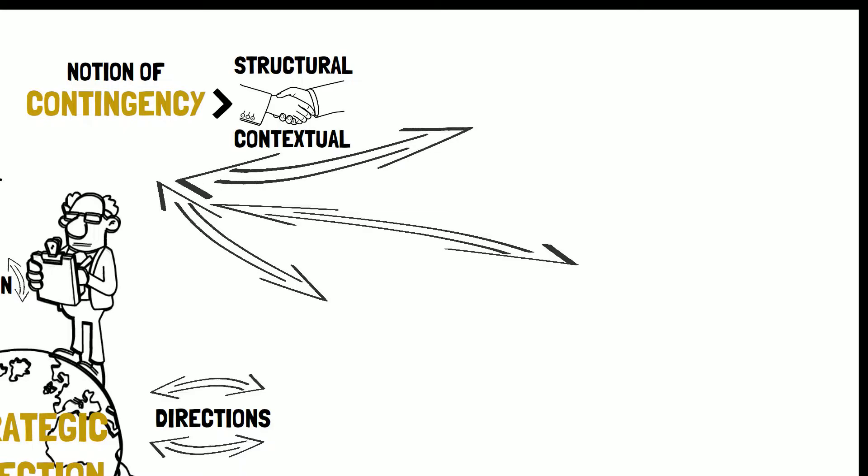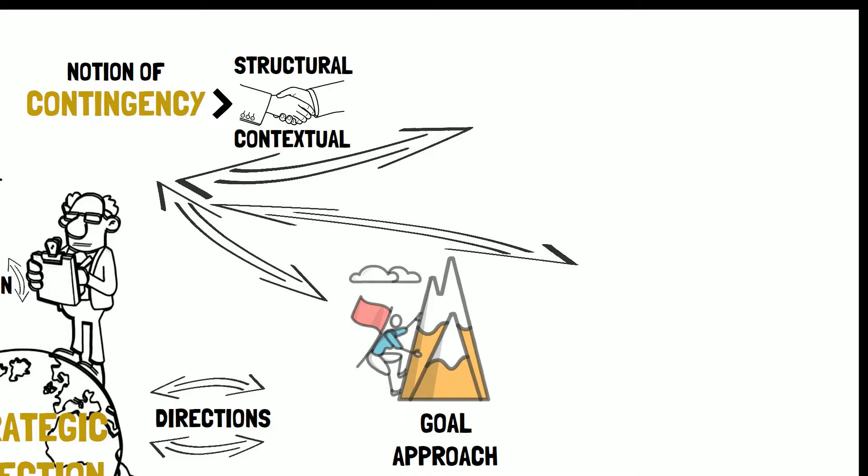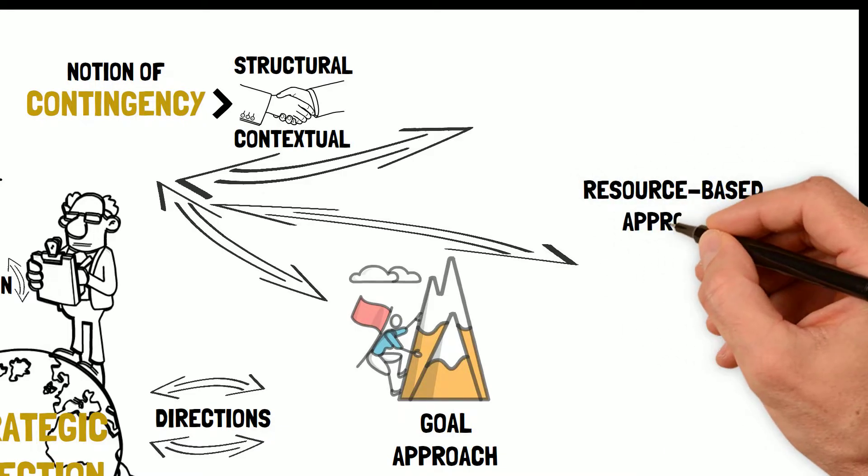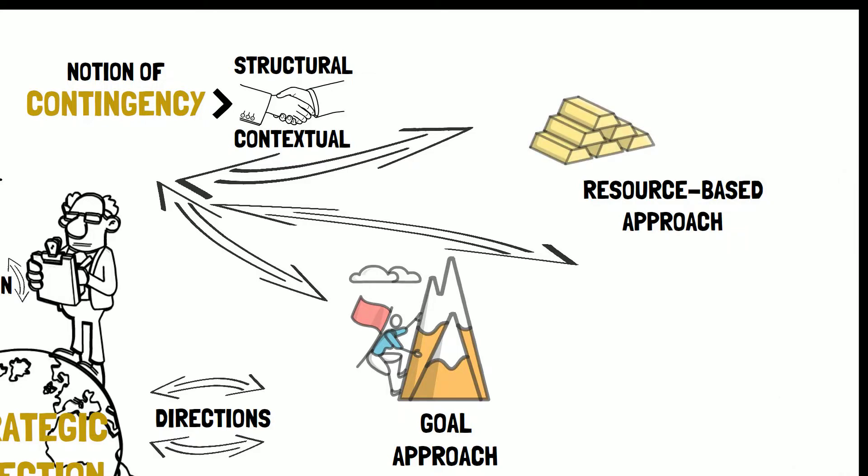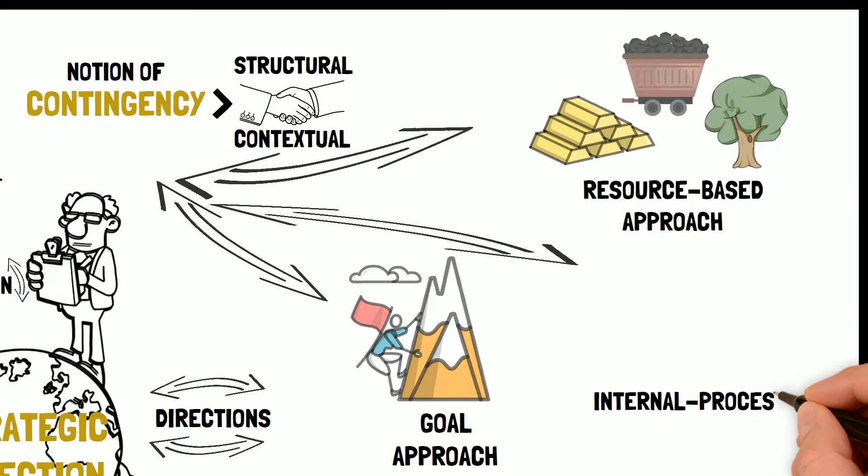Organizations might work on a goal approach, focused on achieving the desired level of output. They can be effective when they are able to accomplish their goals. The second school of thought is the resource-based approach, which evaluates the beginning stages of the process and then judges whether or not the organization will have enough resources to achieve a high level of performance. The third approach is the internal process approach. This focuses on the organization's internal work and evaluates it by the indicators of health and efficiency.